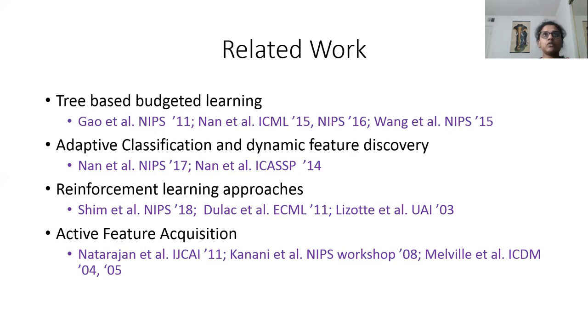There has been work on adaptive classification where a high-cost classifier is learned on all data, then a low-cost classifier built on important features approximates this high-cost function. There have also been reinforcement learning approaches to learn the policy of feature acquisition for every instance.